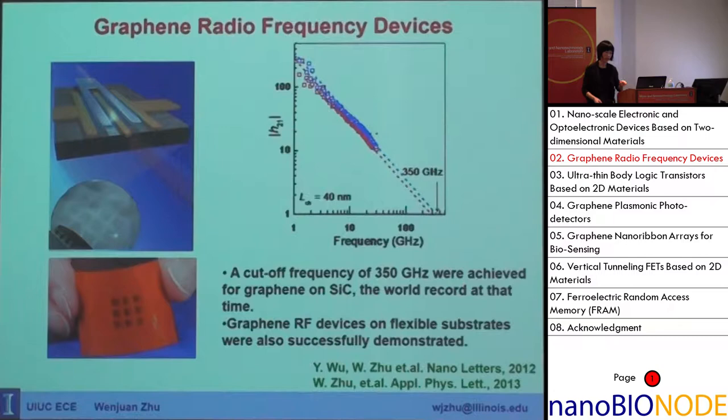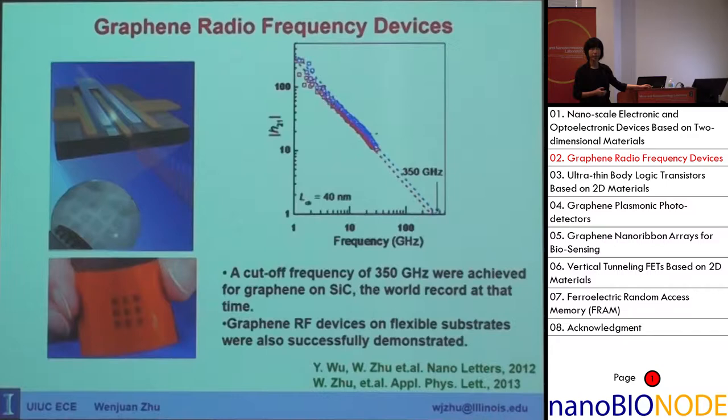For graphene, it has very high mobility but has zero band gap, so we use graphene to build RF devices both on rigid substrates and flexible substrates. We were able to demonstrate 350 gigahertz cutoff frequency for graphene on silicon carbide — that was a world record at that time for graphene transistors.